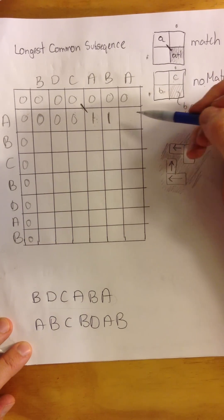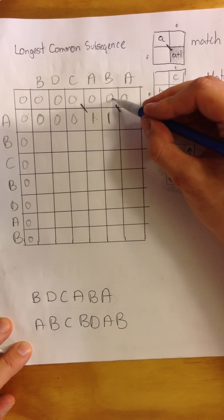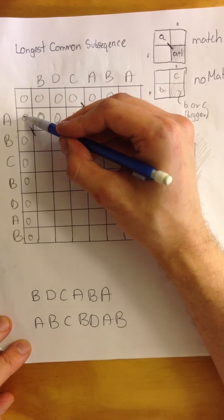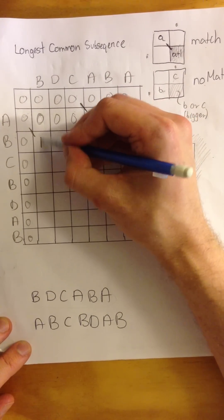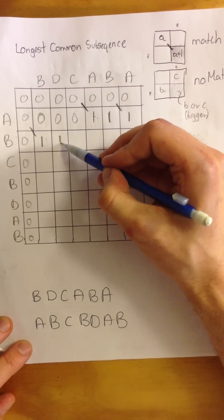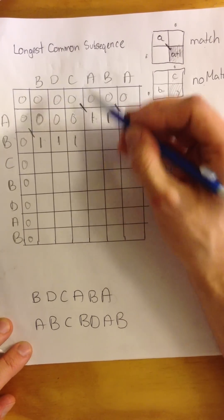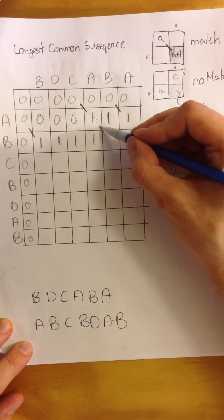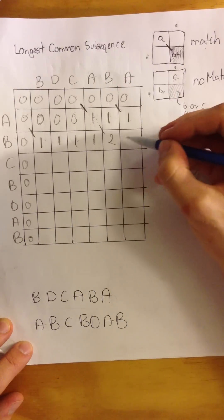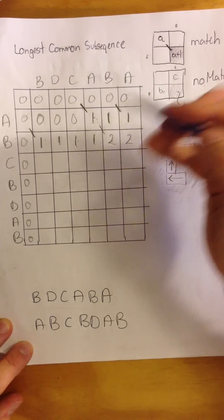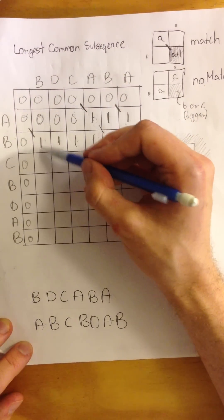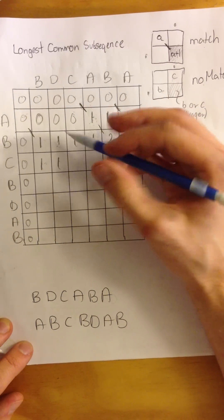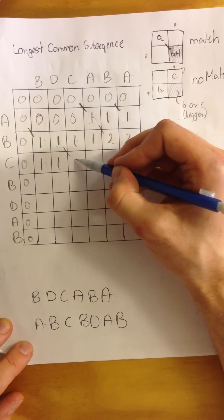B and A — no match, the bigger value is one so we put one. A and A again — match, we create a bridge, take the diagonal value and add one, putting one. B and B — match, bridge, zero plus one is one. D and B — no match, biggest is one. C and B — no match, biggest value is one. B and B — match, bridge, one plus one is two. B and C — no match, biggest value one. D and C — no match, biggest value is one. C and C — match, we create a bridge, one plus one is two.